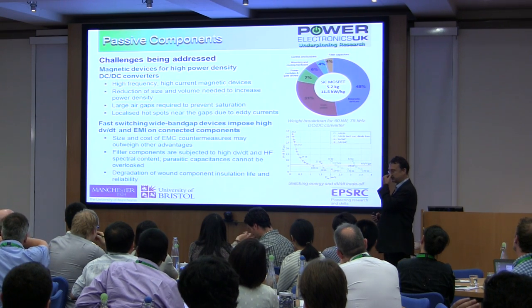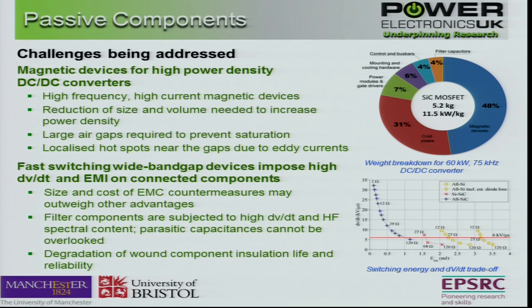The second element of the technologies we're looking at is passive components. Here are two real drivers: one very clear from a breakdown that Andrew in Manchester did for us — if you look at a typical high-power DC-to-DC converter, 48% of the weight of that component is in the magnetic devices. Clearly that's a problem if you want to fly it in an aircraft, or drive it around in a car. So getting techniques, tools and methods, and materials to improve the design of passive components — particularly wound components — is a major driver.